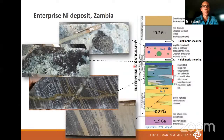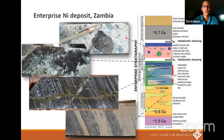Coming up to the top of the system: here's some of these calc-silicate scarnoid things. They're generally not mineralised, and it's kind of interesting that they don't seem to have accommodated very much ductile strain. And then here's one of these post-evaporite polylithic breccias — so-called fluidised breccia in our local nomenclature.